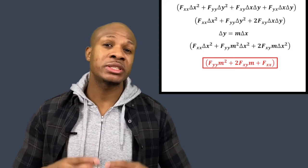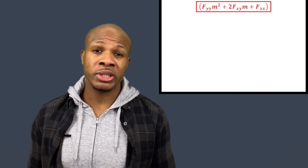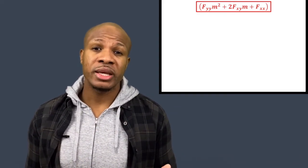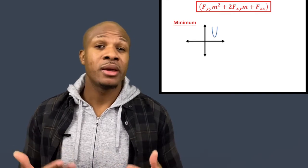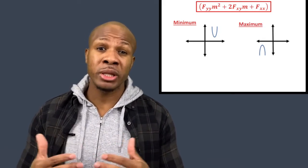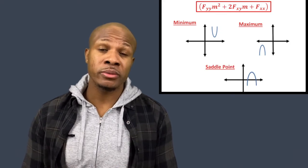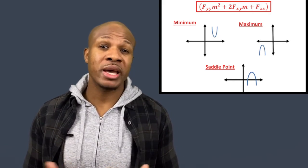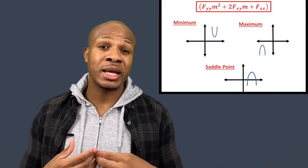This is just a quadratic equation in m, and we know what a quadratic looks like — a second-order polynomial with a U-shaped curve. If this polynomial is positive definite, the entire function lives above the horizontal axis, meaning it's a minimum. If it's negative definite, it lives below the horizontal axis, corresponding to a maximum. If the polynomial takes both positive and negative values it crosses the horizontal axis at two real roots, and two real roots mean it's a saddle point.